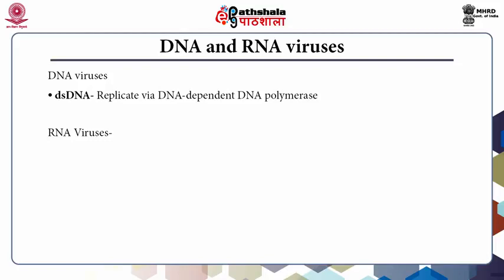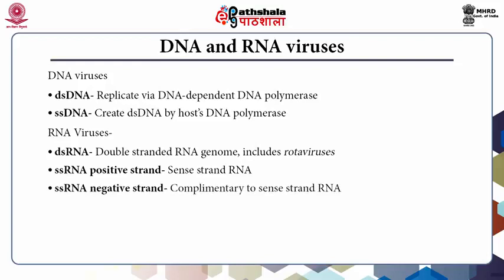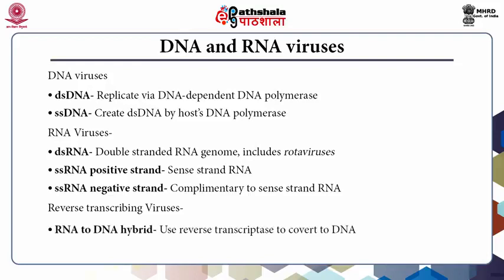Single-stranded DNA viruses first create double-stranded DNA by host DNA polymerase. The second class, RNA viruses, can be double-stranded RNA viruses — this includes rotaviruses. Then single-stranded RNA positive-strand viruses, called sense-strand RNA viruses; or single-stranded RNA negative-strand viruses, which are complementary to the sense strand. There are also reverse-transcribing viruses, which can transcribe RNA to a DNA hybrid using reverse transcriptase, or replicate via a DNA intermediate.